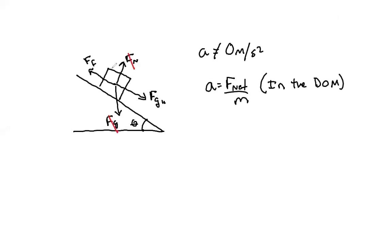Even though the box is accelerating, all we care about is this DOM. Let's solve: a equals F net, we have FG parallel minus FF divided by m total. We could expand this out: a equals mg sine theta minus mu mg cosine theta, all divided by m.